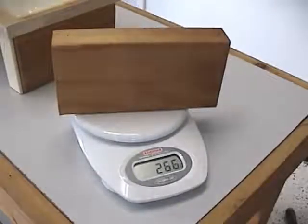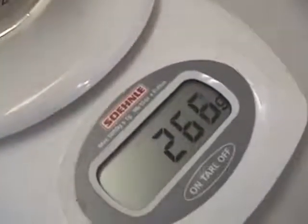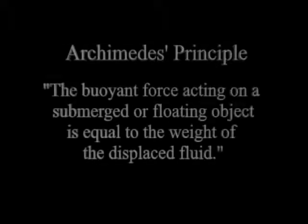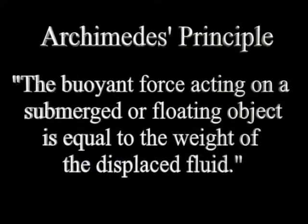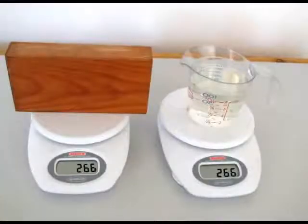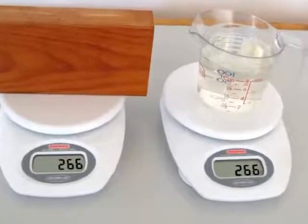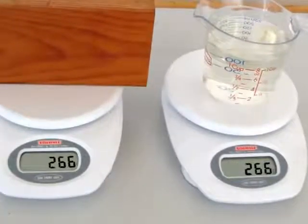The scale indicates that the displaced liquid weighs 266 grams. Do you remember the weight of the wood block? It was also 266 grams. The floating wood block and the displaced liquid weigh the same — 266 grams. This is not a coincidence. This is Archimedes' Principle: the buoyant force acting on a submerged or floating object is equal to the weight of the displaced fluid. Our floating wooden block weighs 266 grams, and the water displaced by the floating block also weighs 266 grams. The floating wood block displaces its own weight in water.